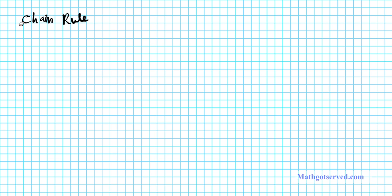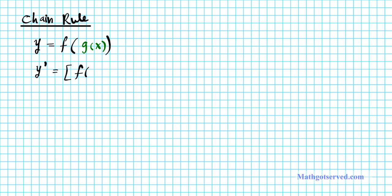The chain rule is basically applicable to composite functions. Let's take a look at the composition of two functions. Say we have a composite function y equals f composed with g of x. Then the derivative y prime is going to be f prime of g of x — the entire composite function prime. The chain rule states that derivative equals f prime of g of x multiplied by g prime of x.